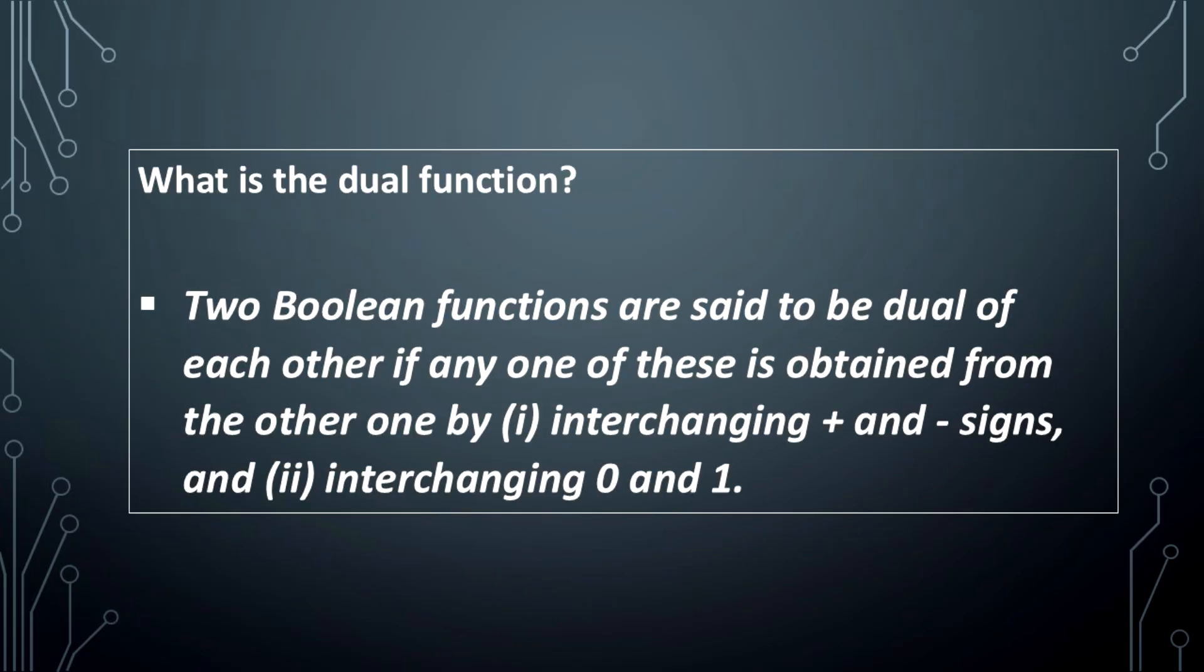What is the dual function? Two Boolean functions are said to be dual of each other if one is obtained from the other by interchanging plus and minus signs and interchanging 0 and 1.